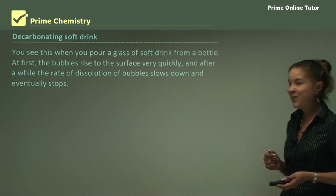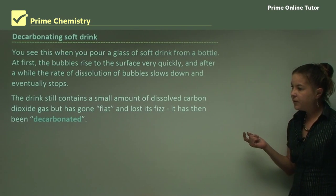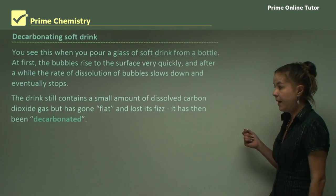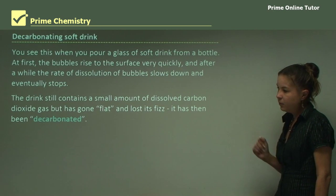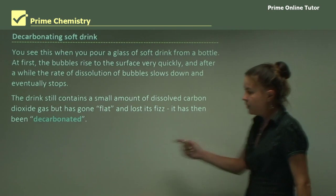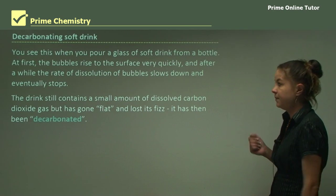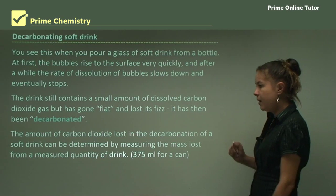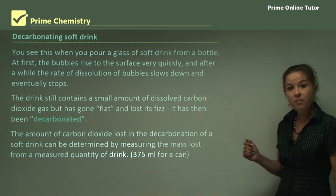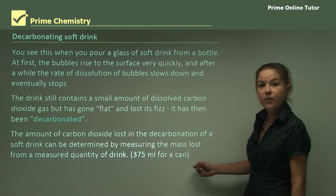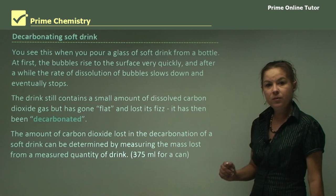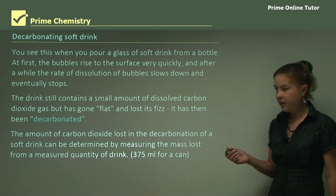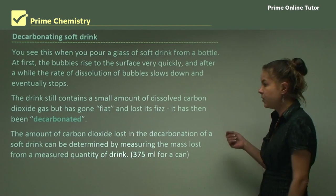The drink still contains a small amount of dissolved carbon dioxide but it has gone flat and lost its fizz - we say it's been decarbonated, meaning the loss of carbon dioxide gas. The amount of CO₂ lost can be determined by measuring the mass lost from a measured quantity of the drink, for example 375 mL for a can. You can actually try this experiment at home with a set of scales - it's really quite simple.